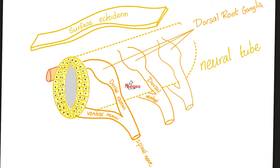If you cut the spinal cord transversely, inside the spinal cord itself there is the spinal canal, which contains cerebrospinal fluid. Similarly, inside the brain the neural tube becomes the brain itself, the neural crest becomes cranial nerves, and the cavity inside the brain is the ventricles, which contain CSF.